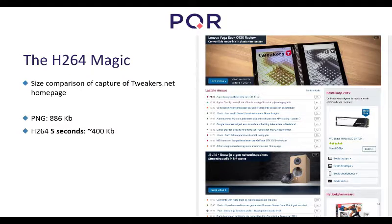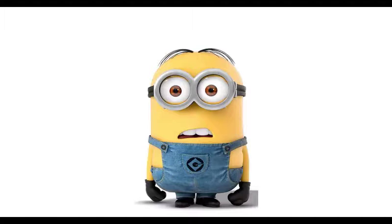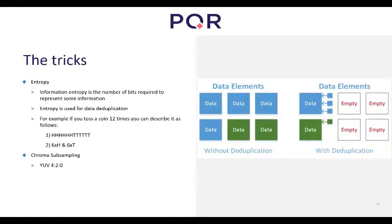H.264 is really like magic. If we compare the size of a screenshot and an H.264 stream, it's very different. I made a screenshot of the Tweakers.net homepage — it's around 880 kilobytes. I also created a 5-second H.264 movie at 30 frames per second — it's only 400 kilobytes in size. So it's half the size but contains 150 frames. How do they do that? There are a few tricks.